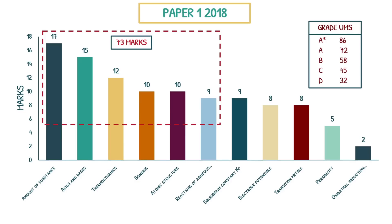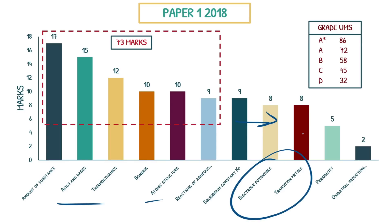Paper one 2018. The topics here are: amount of substance, acids and bases, thermodynamics, bonding, atomic structure, and reactions of aqueous ions. Acids and bases, thermodynamics, and atomic structure were present in the top allocated marks for 2017 as well, so you're going to see a pattern forming. AQA views these topics as fundamental to their specification and includes them year after year. The A star boundary was 86, A was 72, and B was 58 marks.